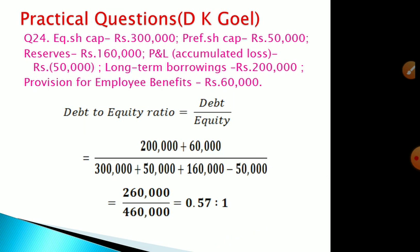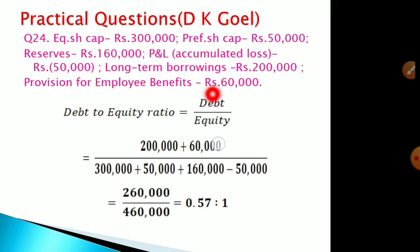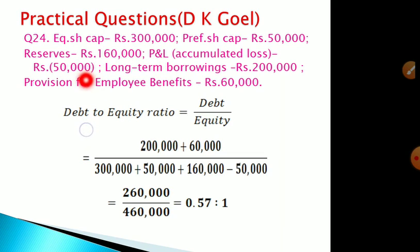Now, practical questions from DK Goel. Question number 24: the items given are equity share capital 3 lakh, preference share capital 50,000, reserve 1 lakh 60,000, profit and loss — a loss of 50,000 — long-term borrowings 2 lakh, and provision for employee benefits 60,000. Classifying these: equity share capital, preference share capital, and reserve are all equity. Profit and loss shows a loss of 50,000, so we deduct that from reserve and surplus.